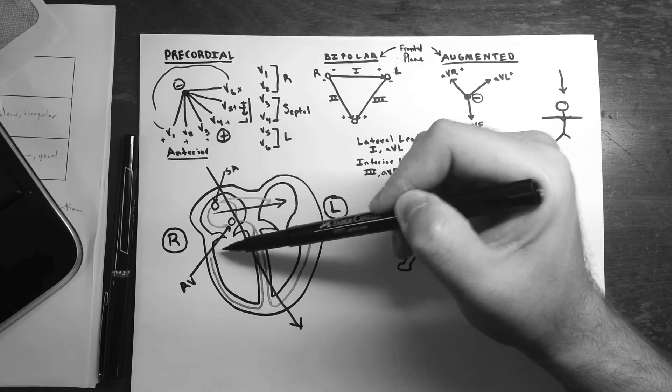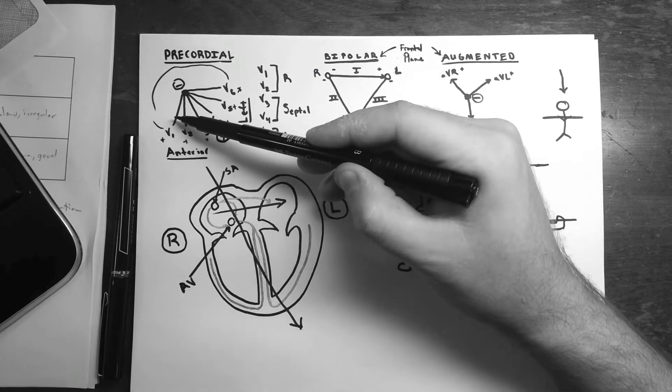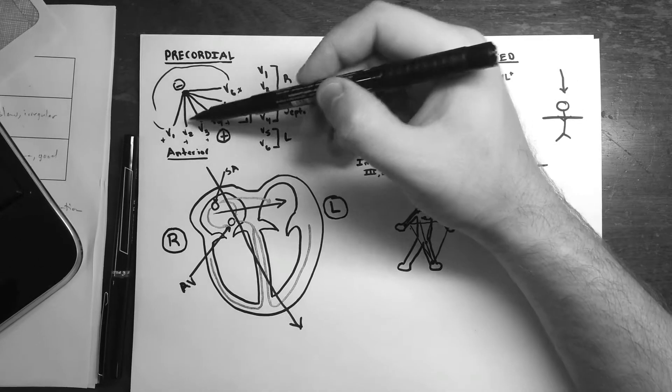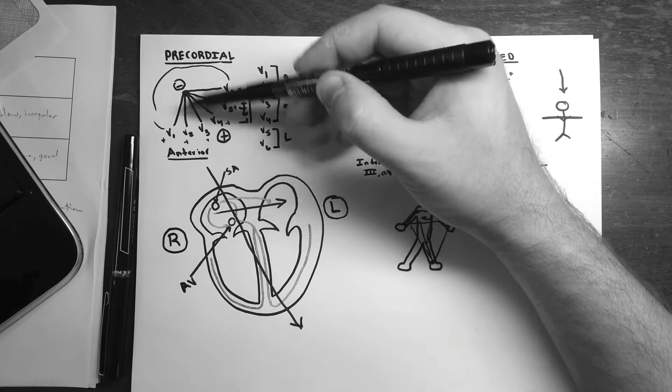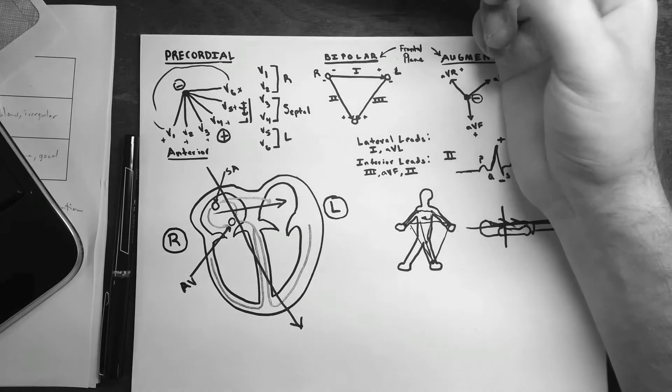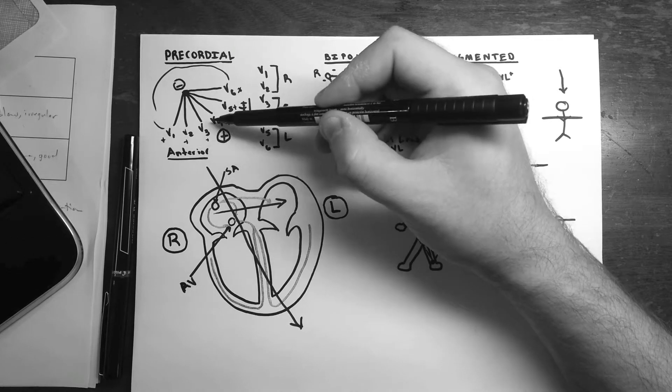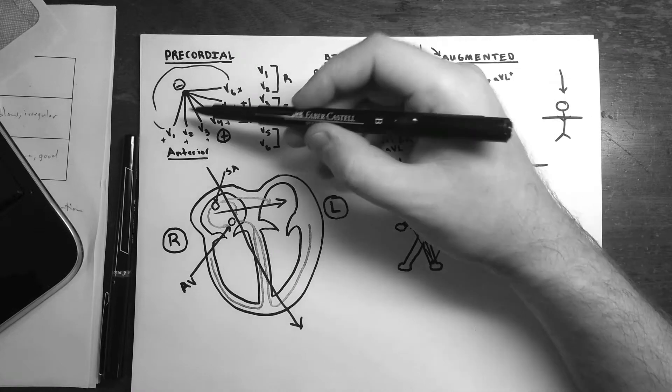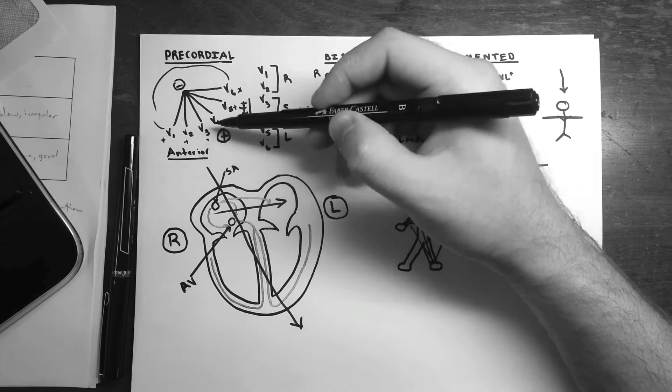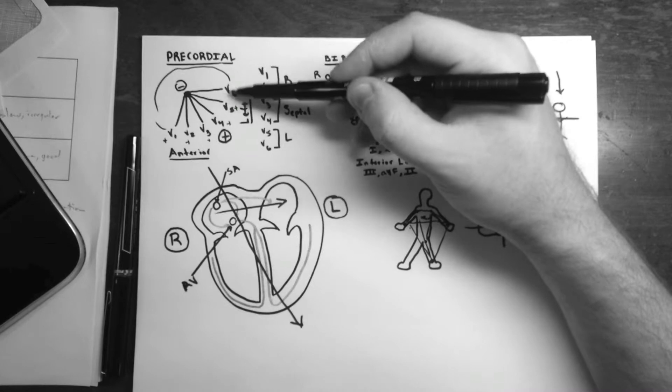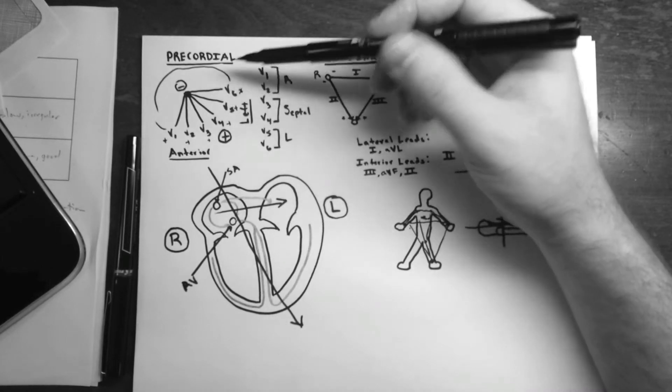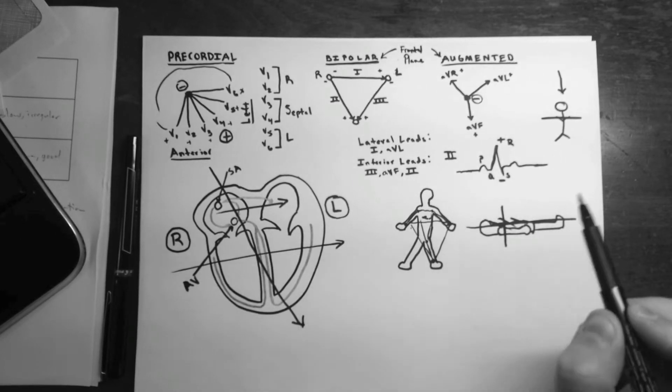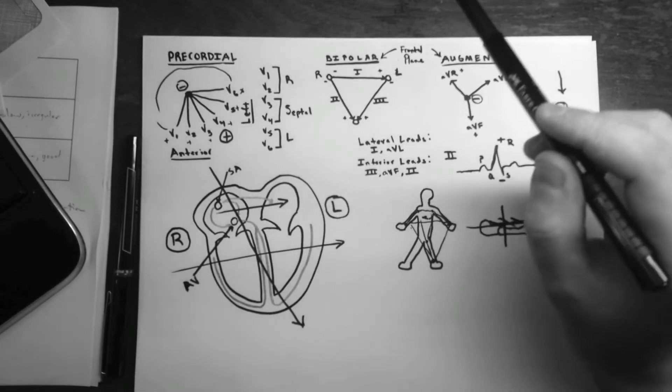So V1 and V2 overlie the right ventricle. V1 being kind of on the right side of the sternum. And V2 being kind of over the sternum, to the left of the sternum, maybe sometimes depending on placement. And V2, V3, V4 can kind of be considered septal. I read that it's V3, V4, but you know they're all kind of in that general area. And V5 and V6 are definitely overlying the left ventricle. And kind of any activity going this way right here through the heart would be best seen on V5 and V6.